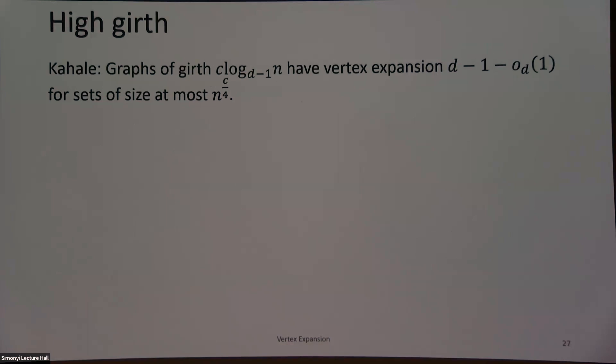Hoory showed that if I have girth C log N, then for polynomially small sets — sets of size N^{C/4} — they expand losslessly. To give an idea of why: suppose I have some small set S that doesn't expand losslessly. If it has lossy expansion, then there are many edges coming out of S that intersect at the same point. If I contract all those edges, I only reduce the girth by a factor of at most two, because I'm changing paths of length two to paths of length one.